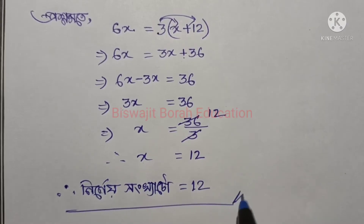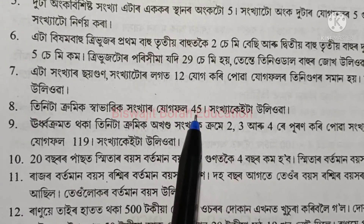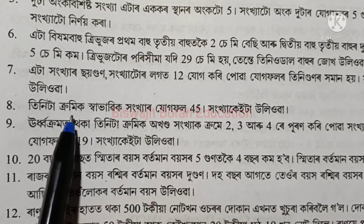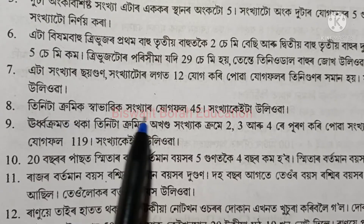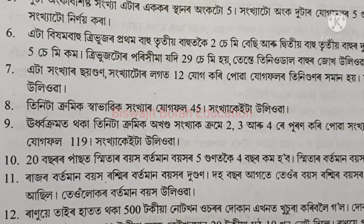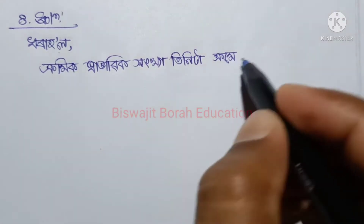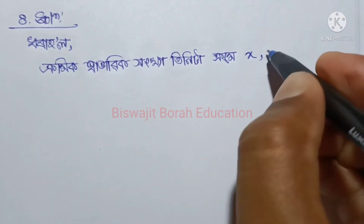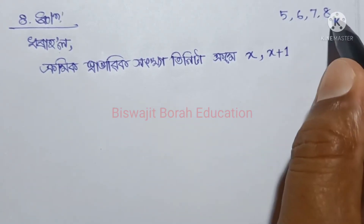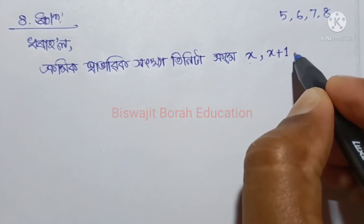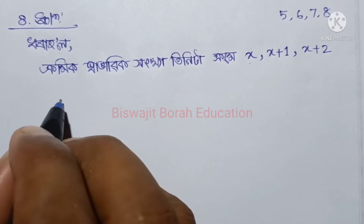હમાં બારા, ક્રમિક સાભાવિ હણખા, 45 — ક્રમિક હણખા, બુલીકલે, બુજીપવાને. Three consecutive natural numbers — ક્રમિક — whose sum is 45. Starting from one number, the next is sequential. We are going to write the question: if x is the first number, then next is x plus 1.